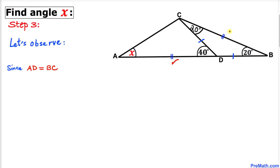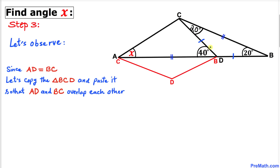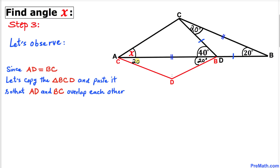We know that side AD equals side BC, so we move triangle BCD upward such that sides AD and BC overlap each other. Vertices B, C, and D are converted into the red B, C, and D shown in the figure. The angles remain the same — 20 degrees on each.